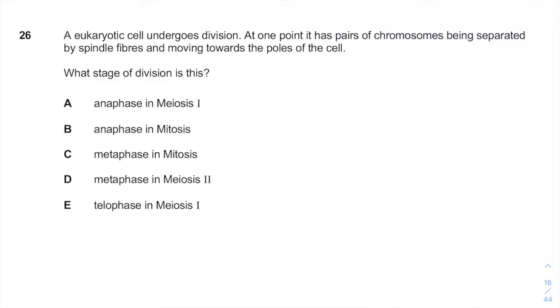A eukaryotic cell undergoes division. So you have either meiosis or mitosis. At one point it has pairs of chromosomes being separated by spindle fibers.